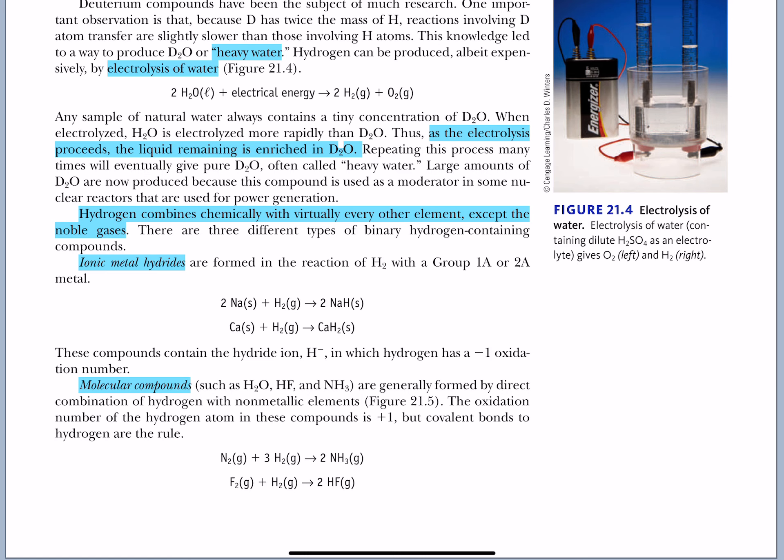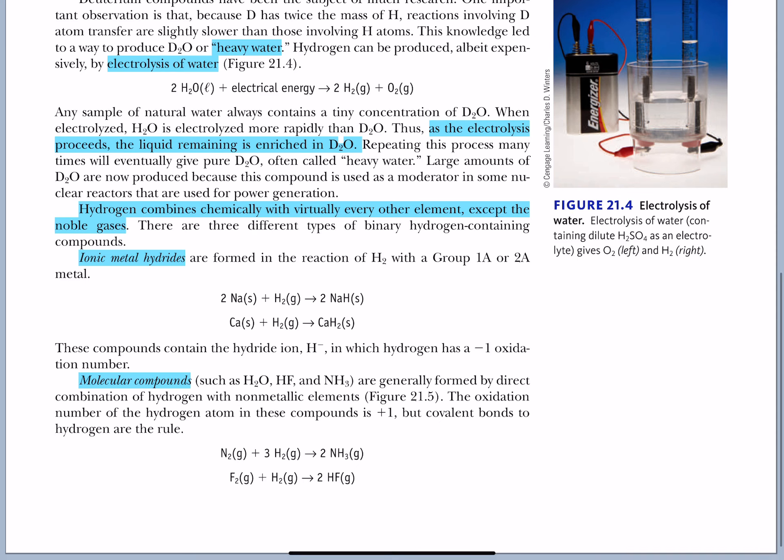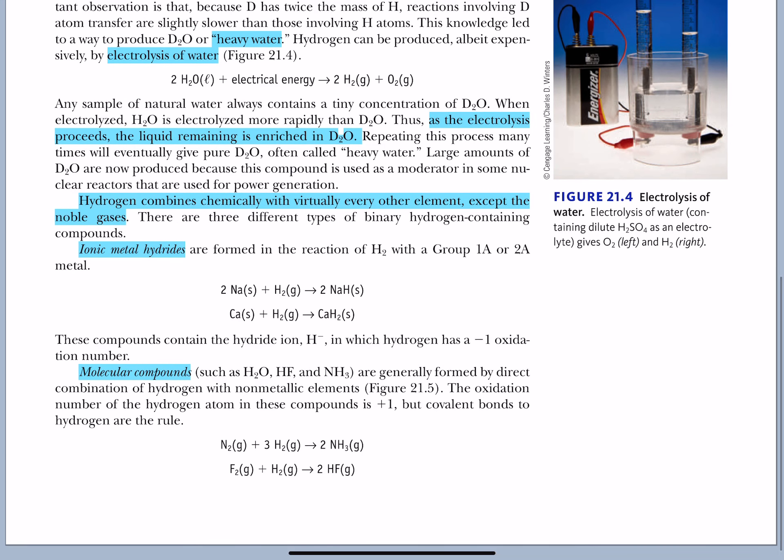Remember, your most metallic of metals are bottom left. Your least metallics are the upper right, which would be fluorine, not counting the inert gases. So your metal hydrides would be the metal as the positive ion and the hydrogen as the negative one. We also make lots of molecular compounds with hydrogen.